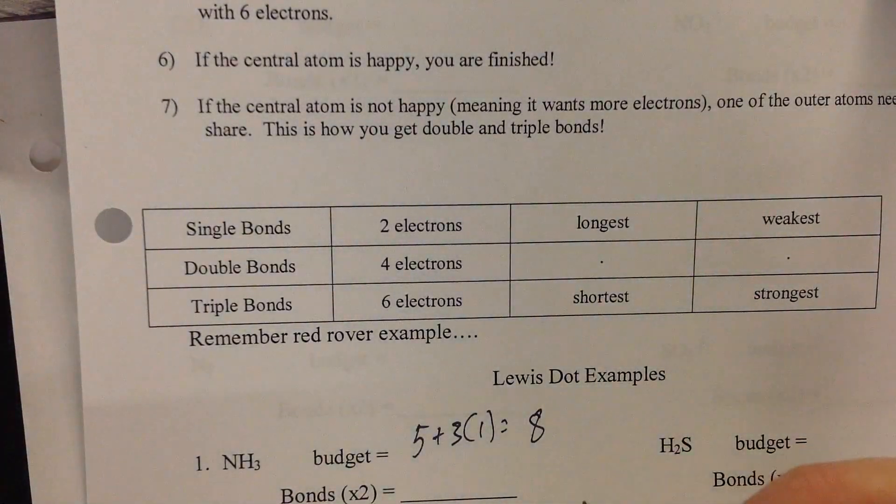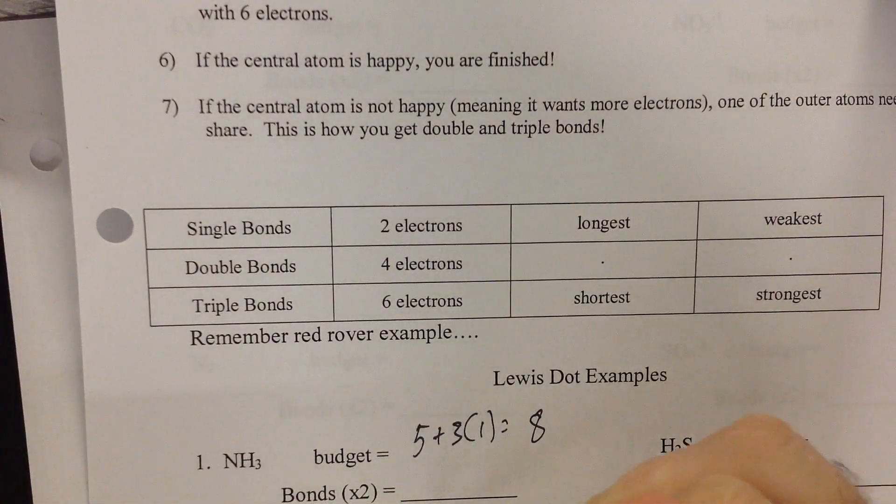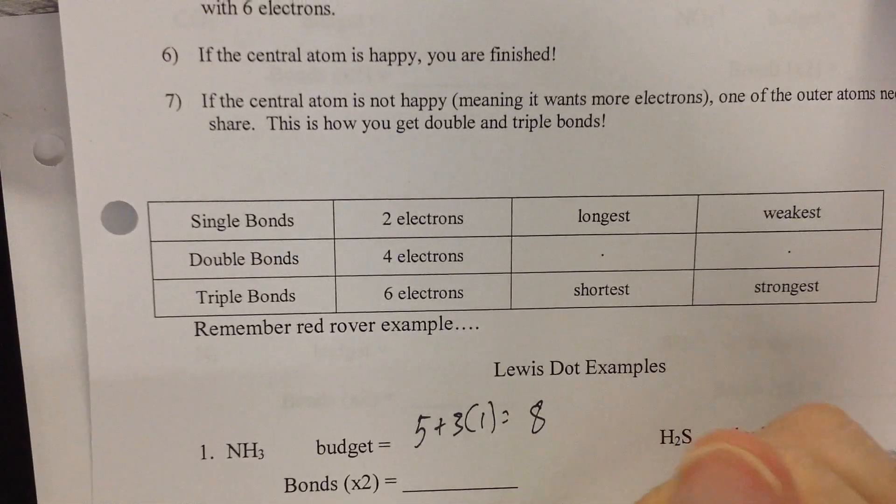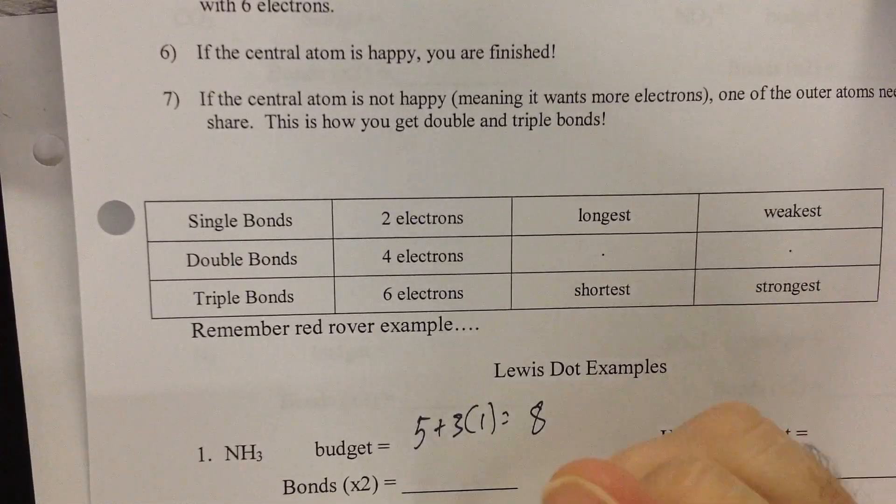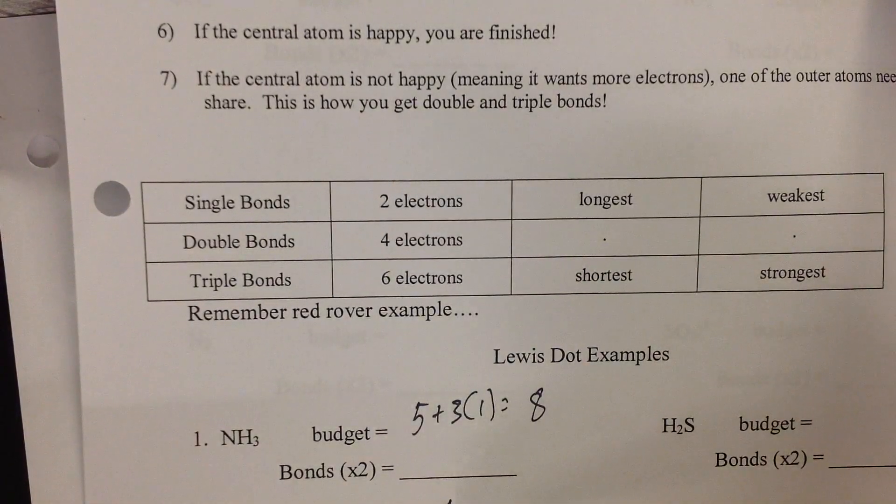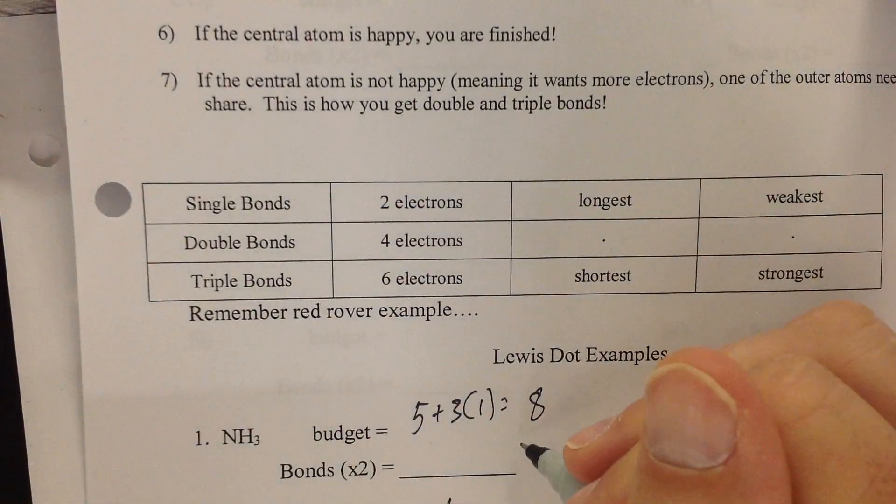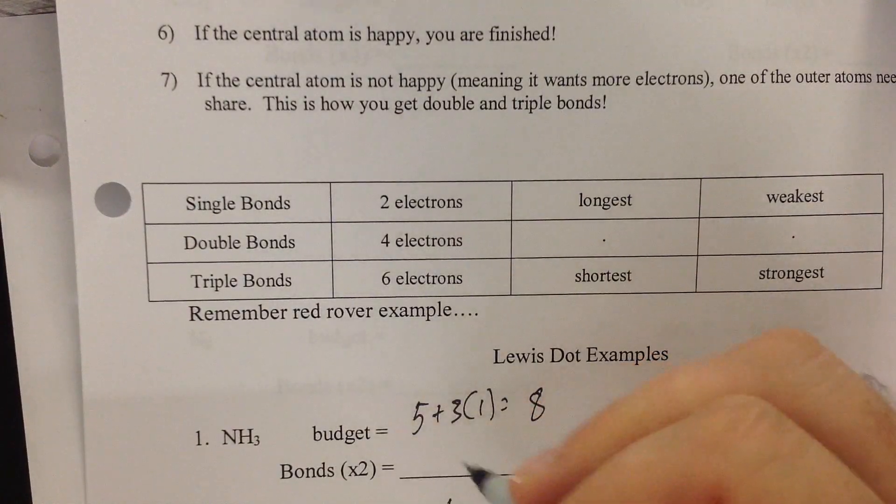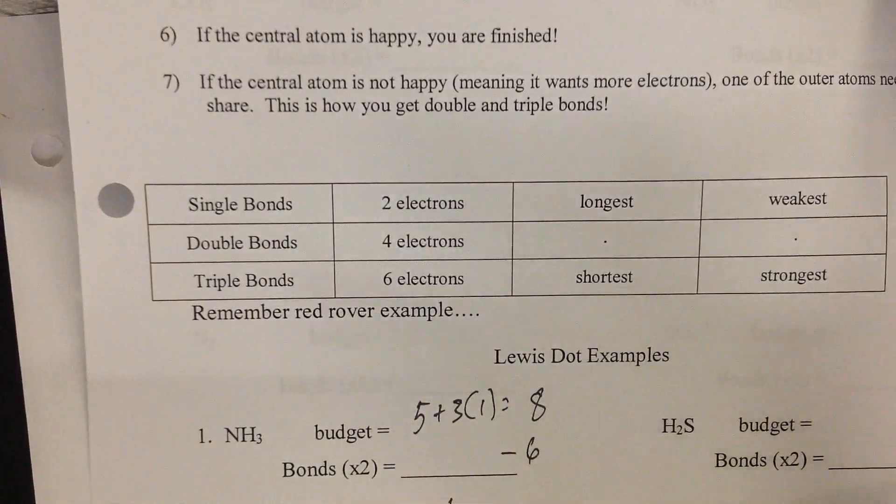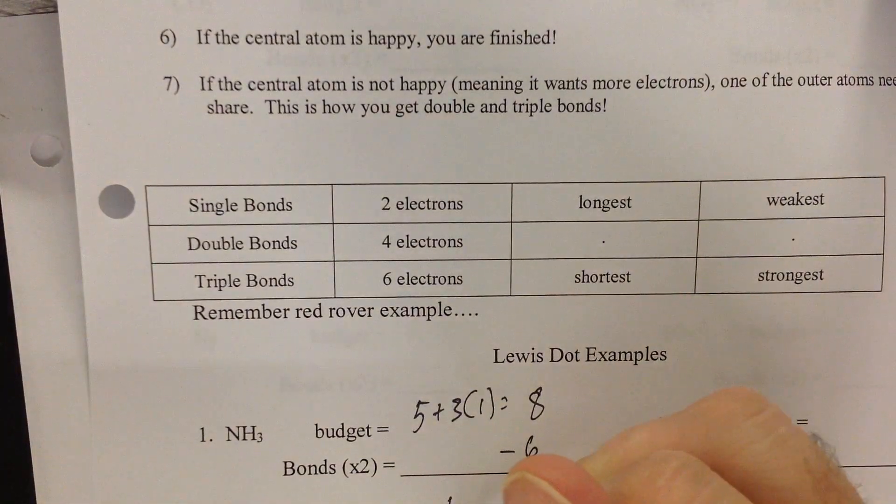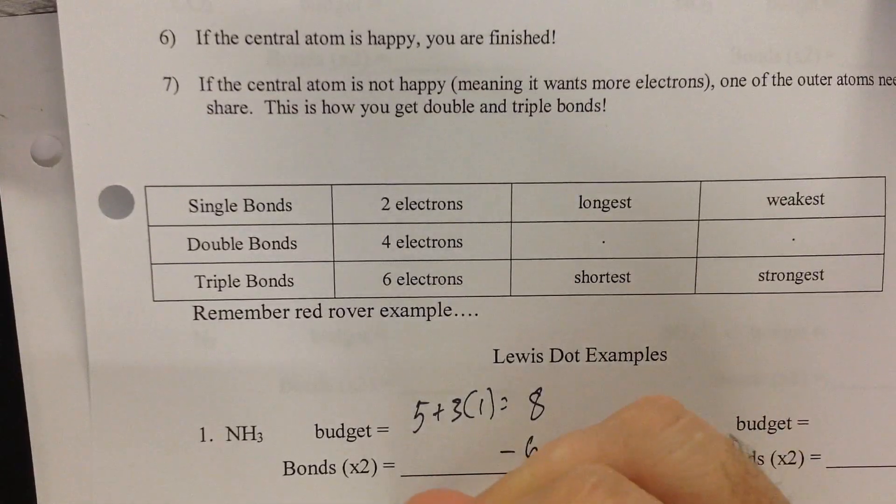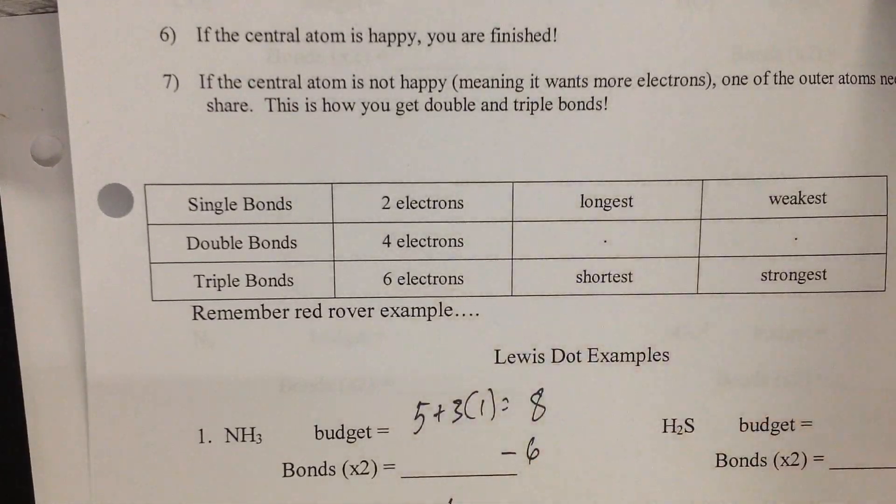Now we're going to draw our skeleton model, which would be N with three H's around it. Now each bond represents two electrons, so that would be what she's saying here. Bonds times two is six electrons. Understand what she said times two? Because there's two. If you draw the two electrons, you'll understand where the two comes from.